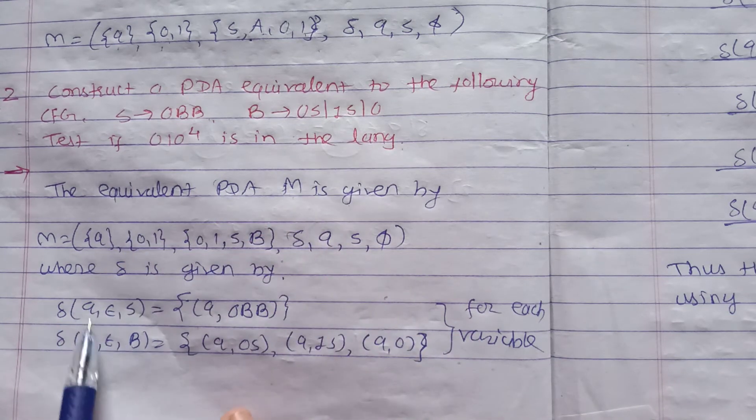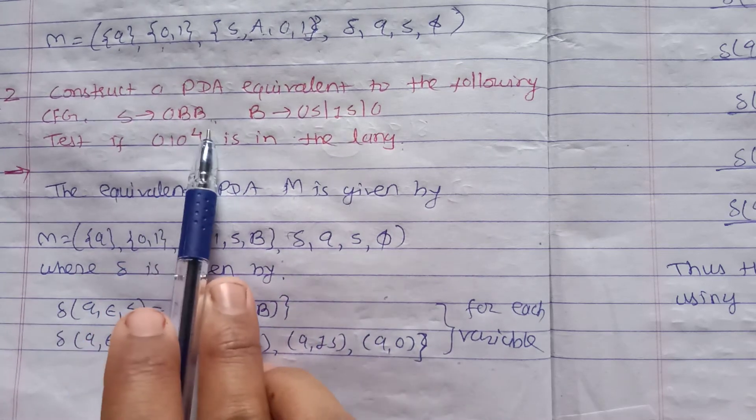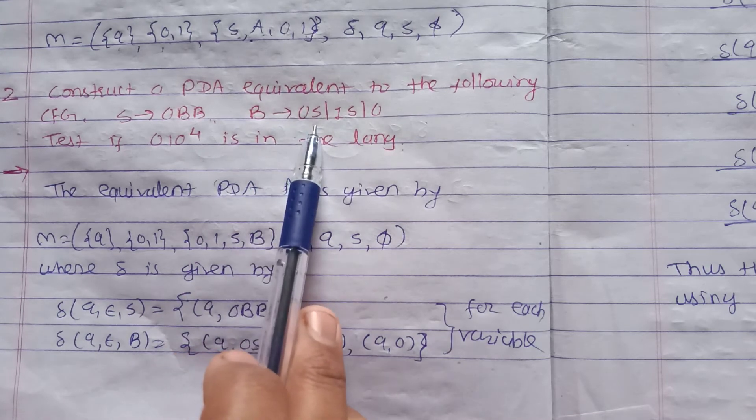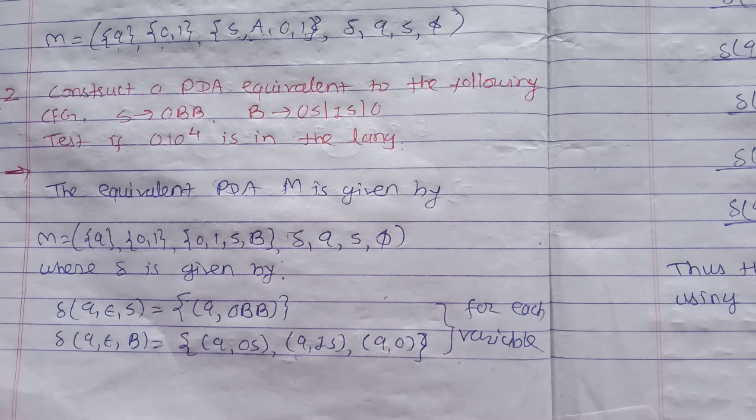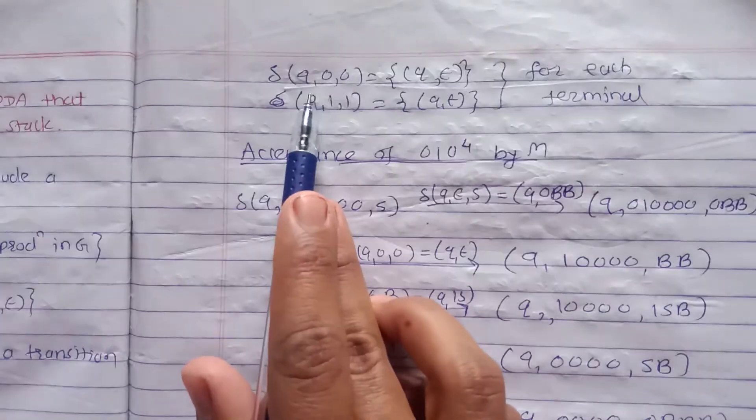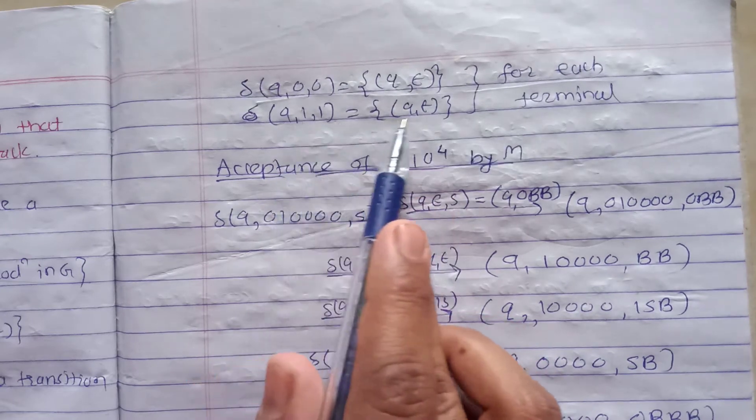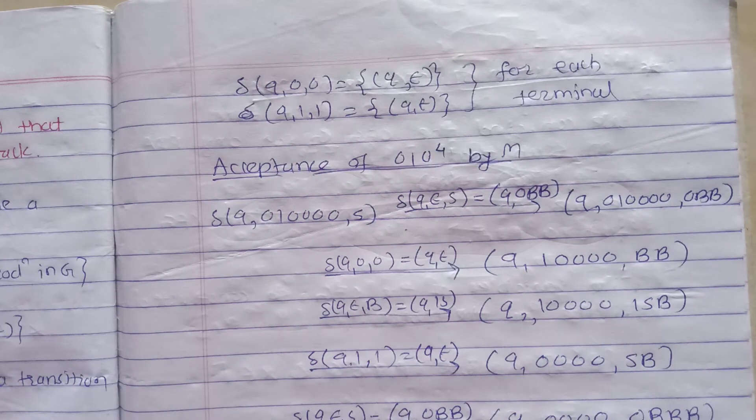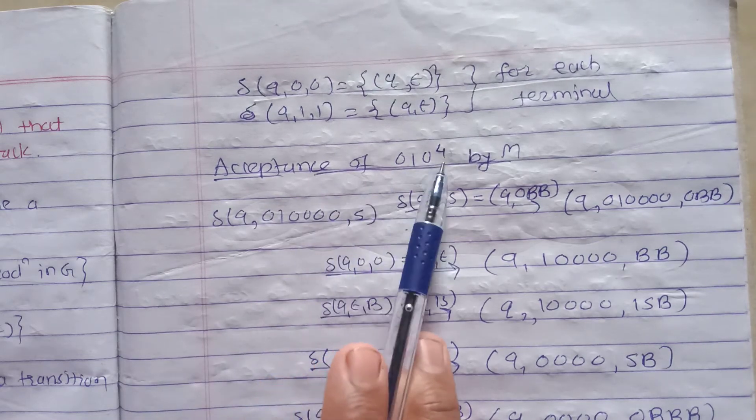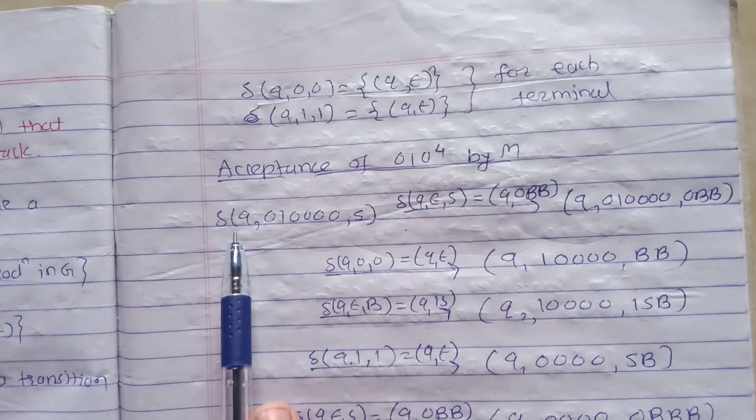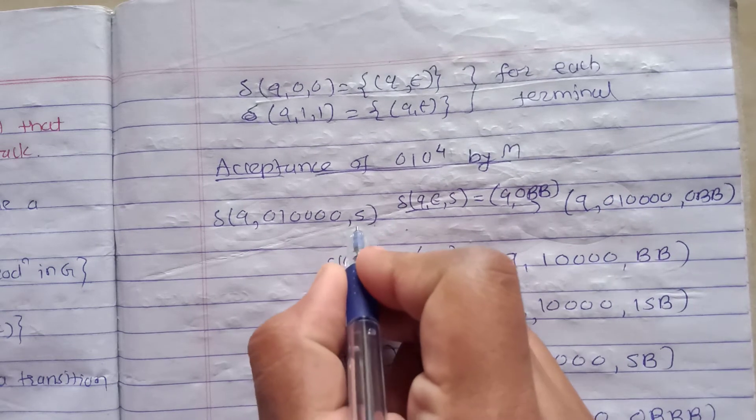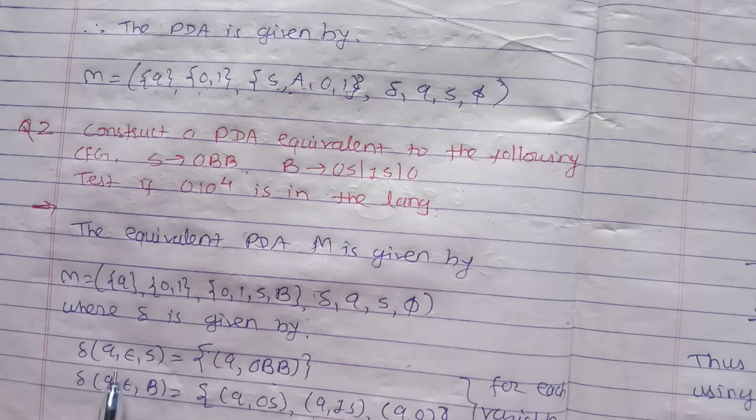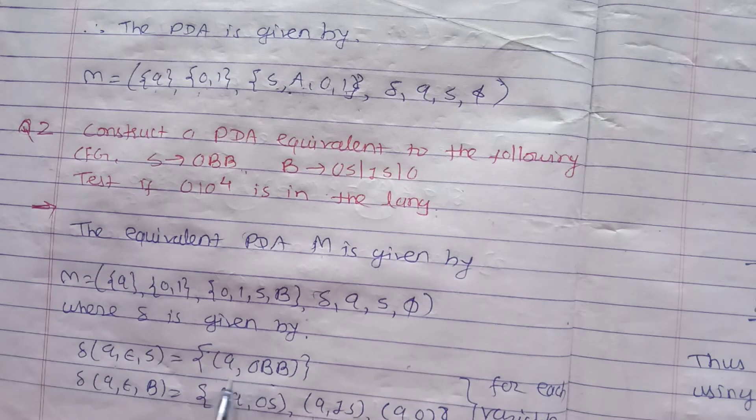Where delta is given by - first for each variable include the transition: δ(q, ε, S) equals (q, 0BB), δ(q, ε, B) equals (q, 0S), (q, 1S), (q, 0). For terminals: δ(q, 0, 0) equals (q, ε), δ(q, 1, 1) equals (q, ε). Now we show the acceptance of string 0,1,0 to power 5 by the machine.